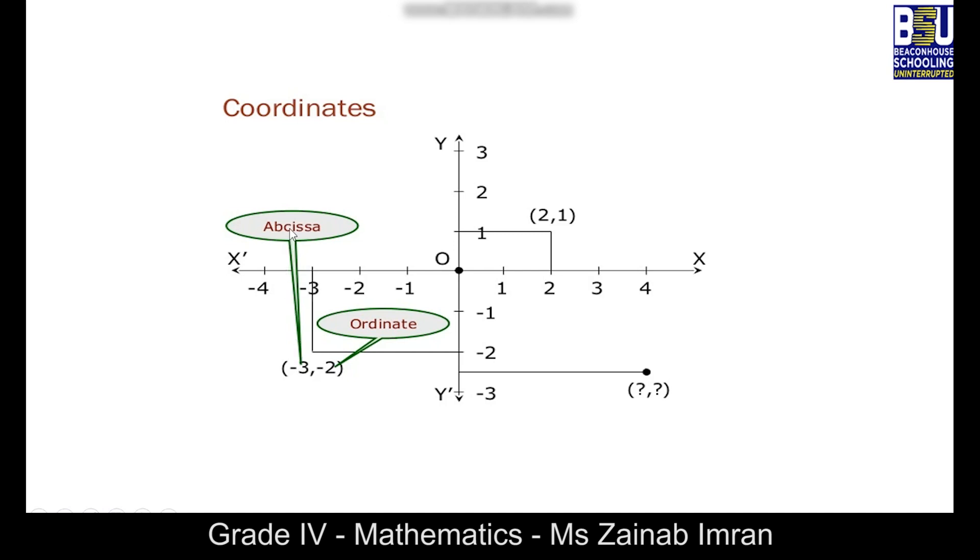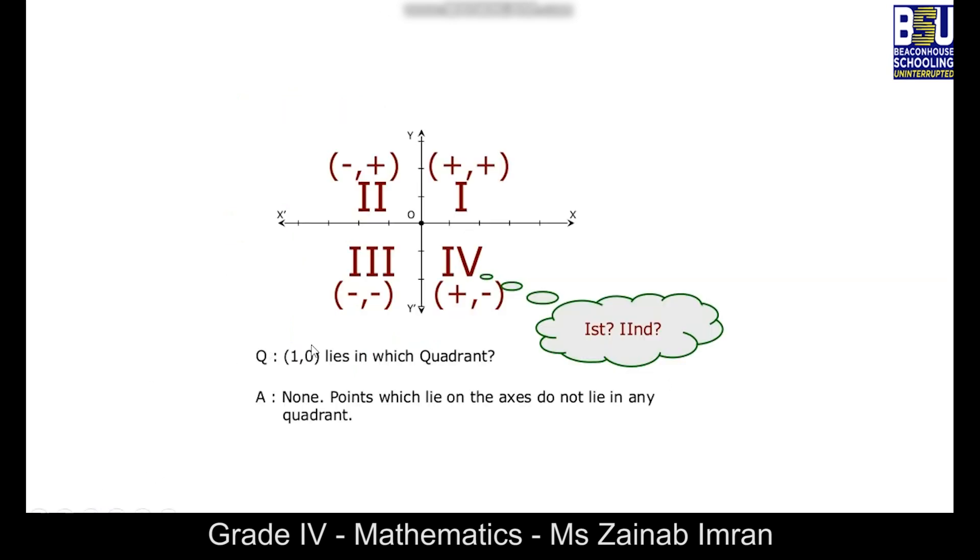Here you can see this x-coordinate is also called abscissa and y-coordinate is also called ordinate. Well, can you tell me: (1, 0) lies in which quadrant? Yes, its answer is none, because points which lie on the axes do not lie in any quadrant.